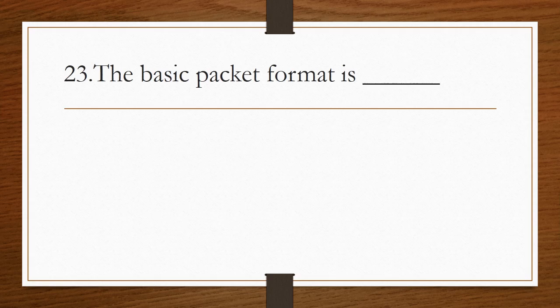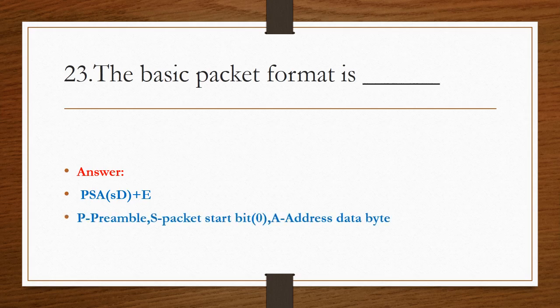The basic packet format is P-S-A-s-D-E. Where capital P stands for preamble. S stands for packet start bit, normally its value is zero. Then A stands for address data byte. Then small s stands for data byte start bit. And capital D stands for data byte. Capital E packet end bit, normally its value is equal to 1.